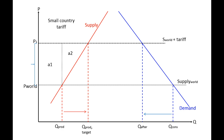Let's look at the producers. The producer surplus will increase by area A1, because producers now receive higher payments for each of the units they originally produced. They will also gain area A2, which represents the increased production sold at a price higher than the marginal cost of each additional unit. However, these two areas A1 and A2 are also losses for consumers, since these units are now sold at a higher price. So A1 and A2 are positive producer surplus and negative consumer surplus.